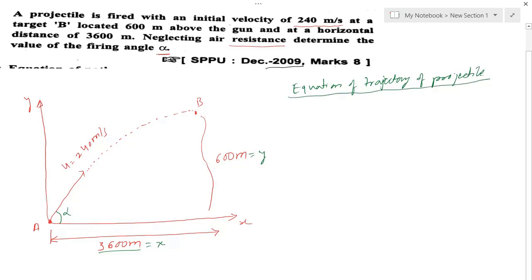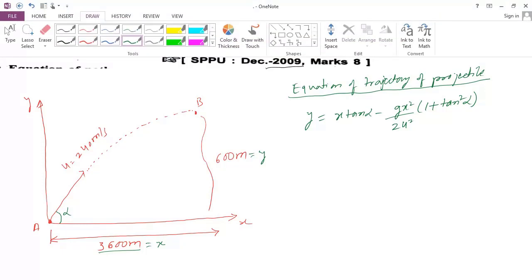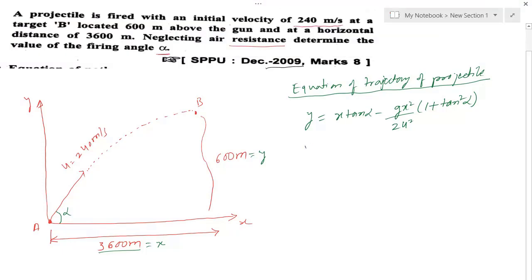y equals x tan alpha minus g x squared upon 2u squared, multiplied with 1 plus tan squared alpha. In this, let us write the given data.